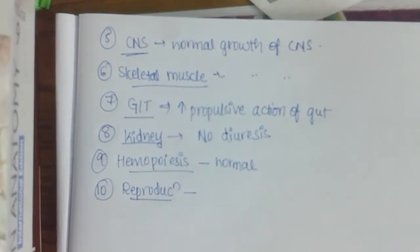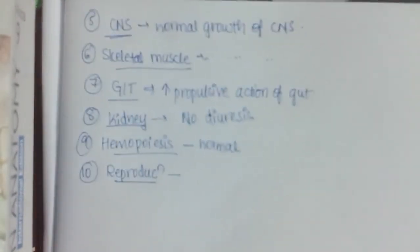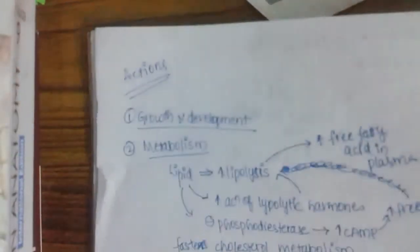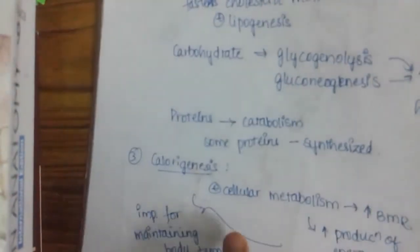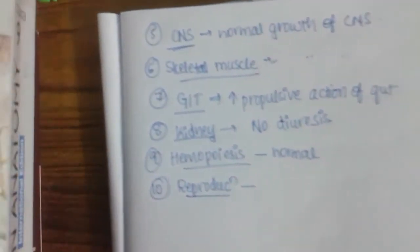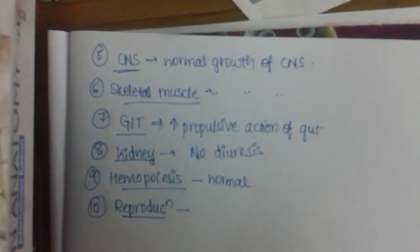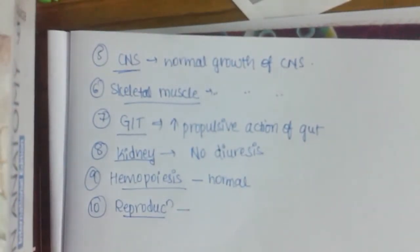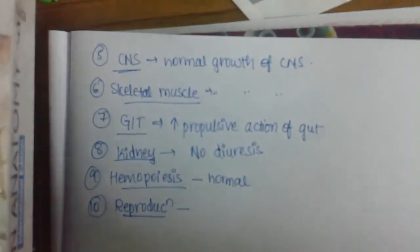Thus thyroid hormone is necessary for normal growth and development of our body. In this topic we have learned about the actions of thyroid hormone: growth and development, metabolism, calorigenesis, CVS effects, CNS, skeletal muscles, GIT, kidney, hemopoiesis, and reproduction. In our next class we will learn about the pharmacology, pharmacokinetics, and interactions of thyroid hormone.